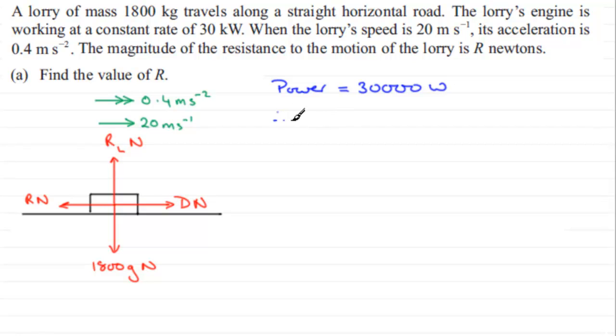so that's going to be 30,000 watts. And we therefore have 30,000 watts is equal to the driving force D times the velocity, which is going to be 20. It's a formula that you should know. Let me just write it up here. I'll say P equals DV.